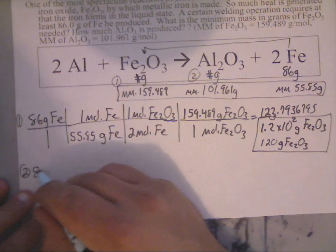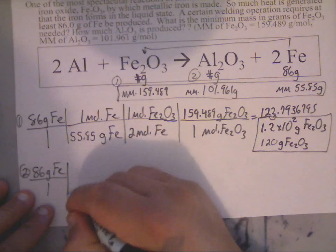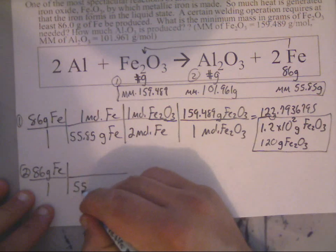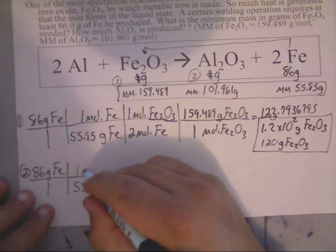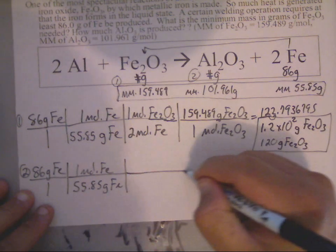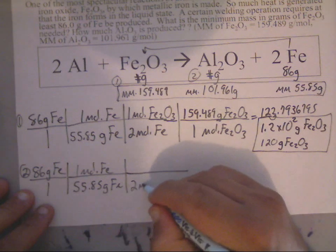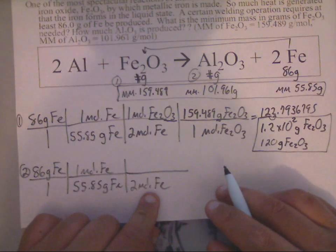The second part is going to look a lot like the first because I'm going to be going from 86 grams of Fe. I'm just pretty much going to copy what I already have here. If you've done it correctly, I would copy it. We have two moles of Fe there.